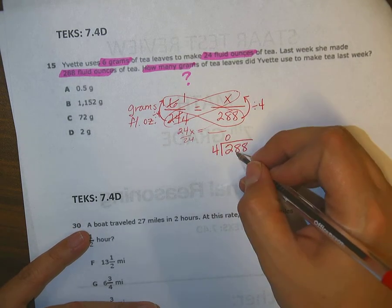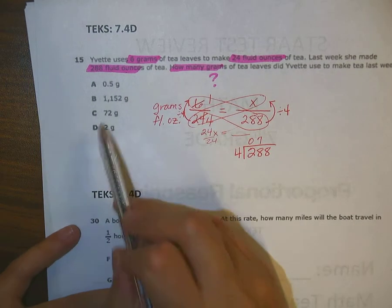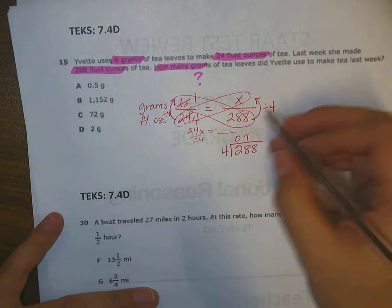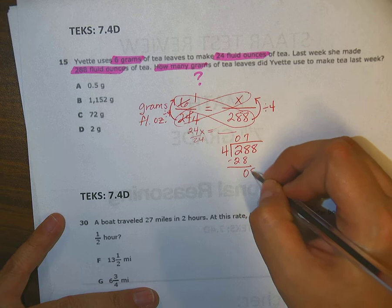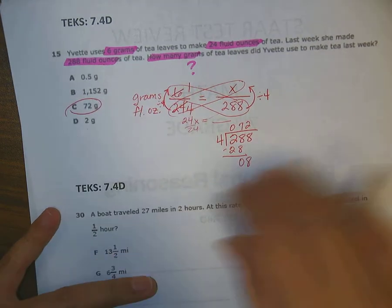4 into 2 is 0, but 4 into 28 is exactly 7 times. And look, I can stop now because there's only one answer choice that starts with a 7. But I'll prove it. 28, subtract, and then 4 into 8 is twice. Ta-da! Letter C. Very nice.